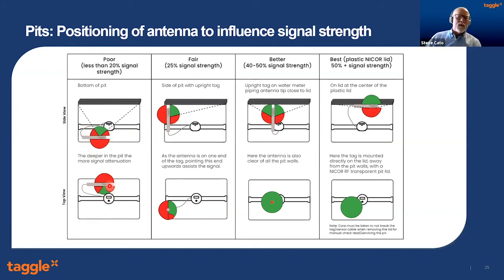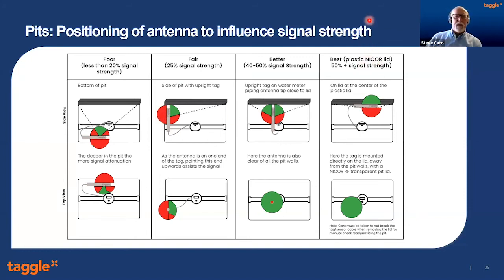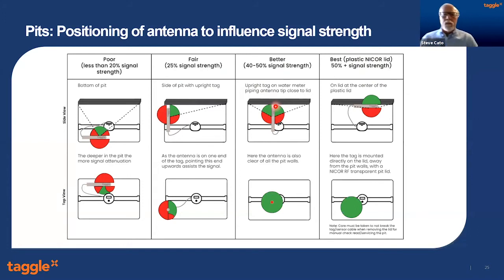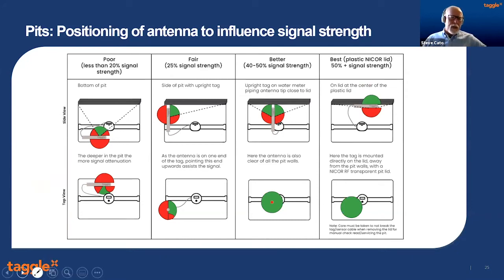If you put the tag over to one side, that whole side is going to lose signal. It might not be too bad if your receiver is positioned there, but you're better off to have it in the middle of the pit, close to the top, where you get the majority of your power out through the pit lid. If you can put it up on top of the lid, you get a nice spread of power. If you use the right sort of lid — because plastics ain't plastics — you can get even better signal strength.